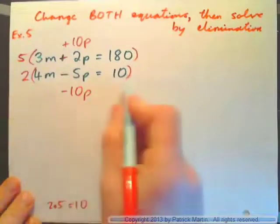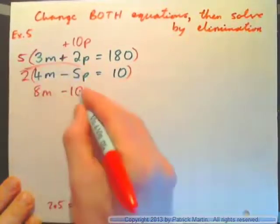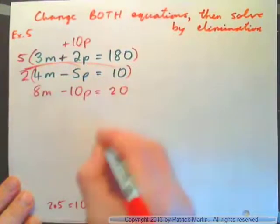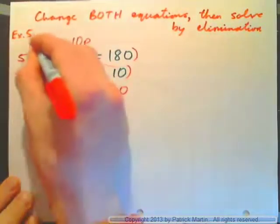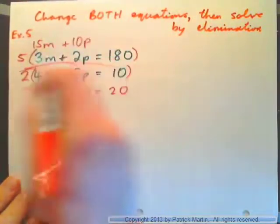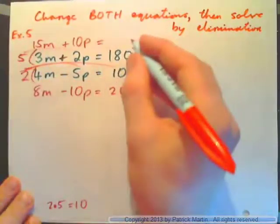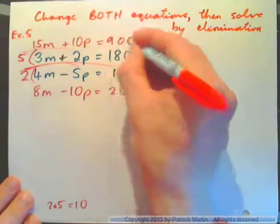So if I multiply the bottom equation by 2, I'll get 8m minus 10p and then 2 times 10 equals 20. If I multiply the top equation by 5, I get 15m plus 10p and then 5 times 180 equals 900.